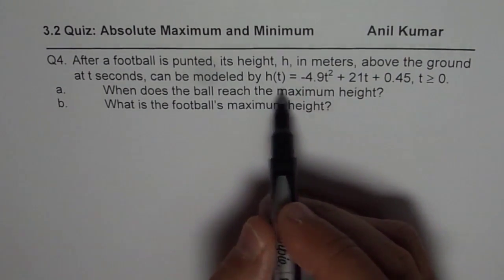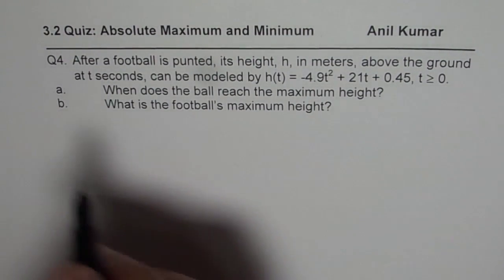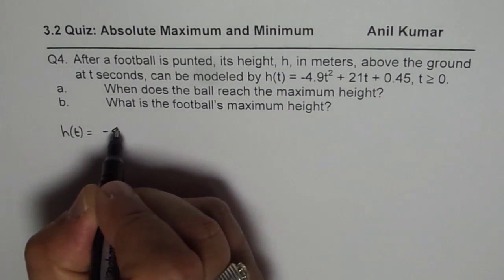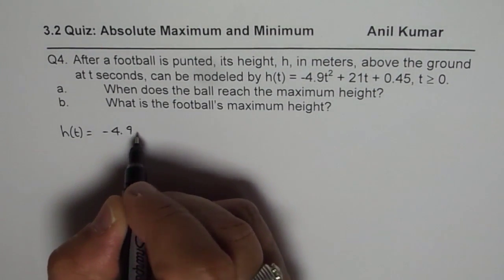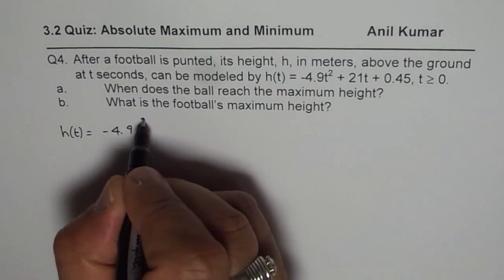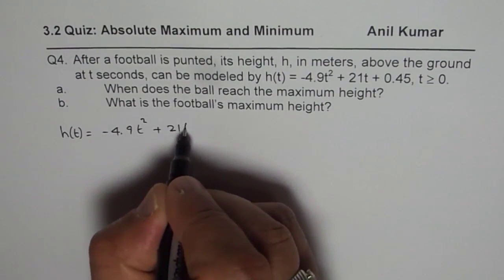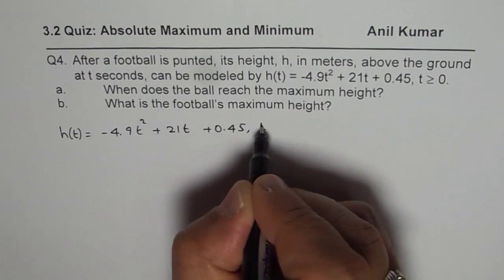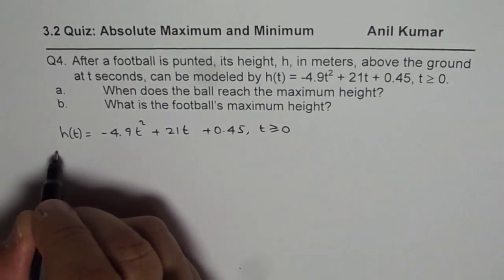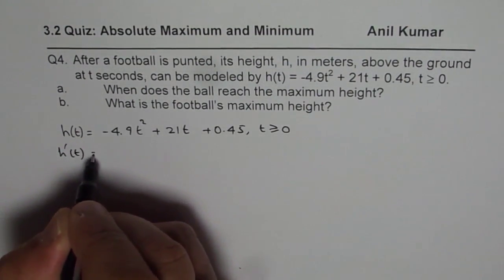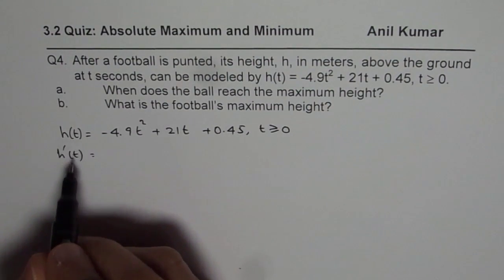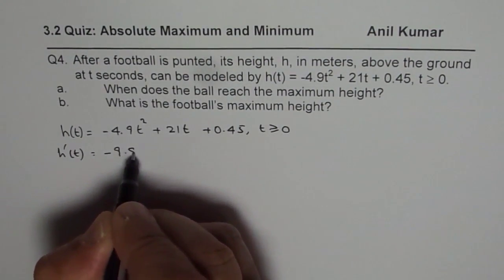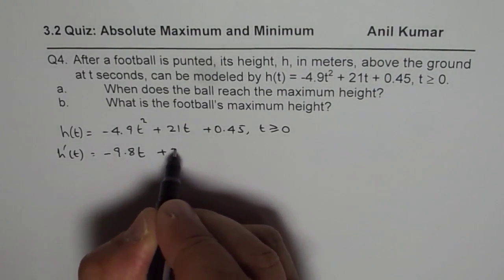To find the answer, we need to find the derivative of the function. We have h(t) = -4.9t² + 21t + 0.45, where t ≥ 0. So h'(t), the rate of change of height with respect to time, will be -9.8t + 21.